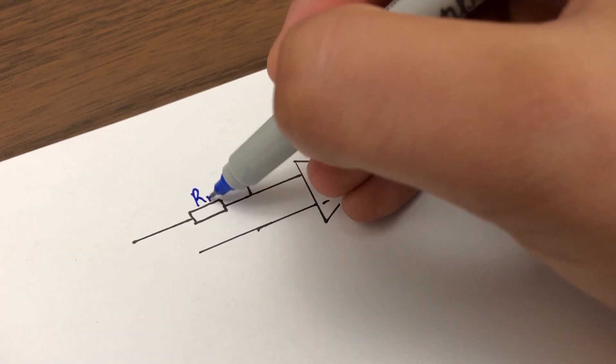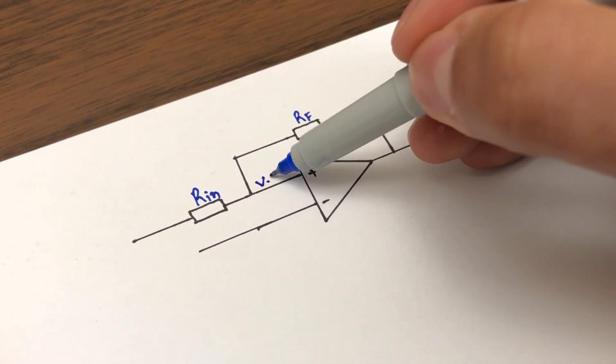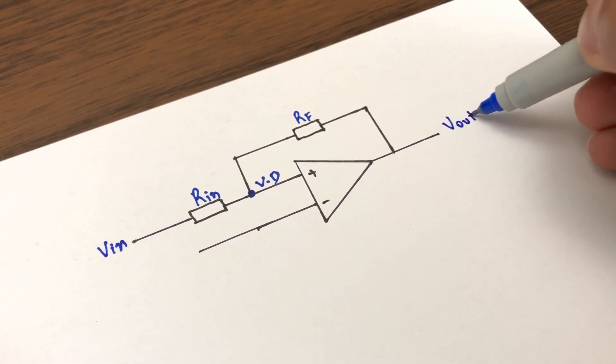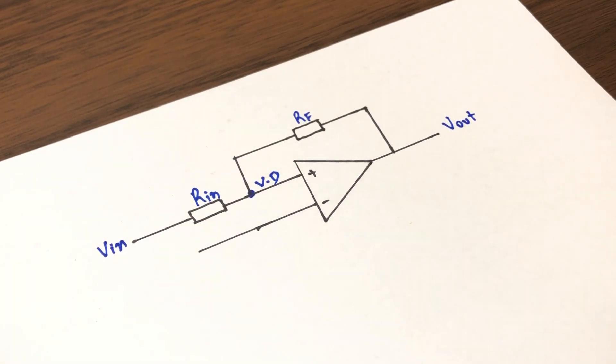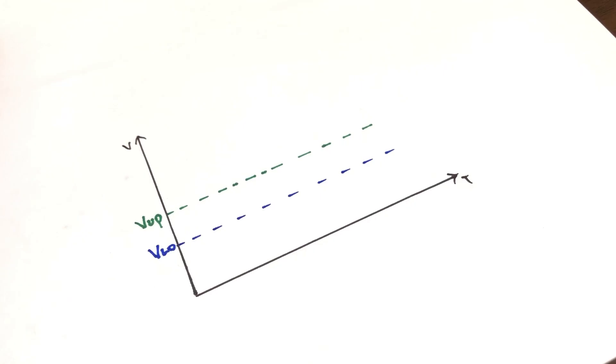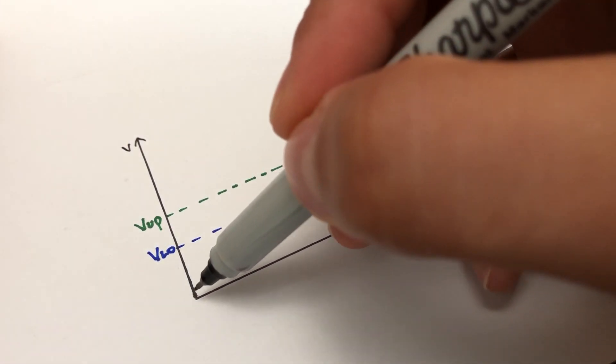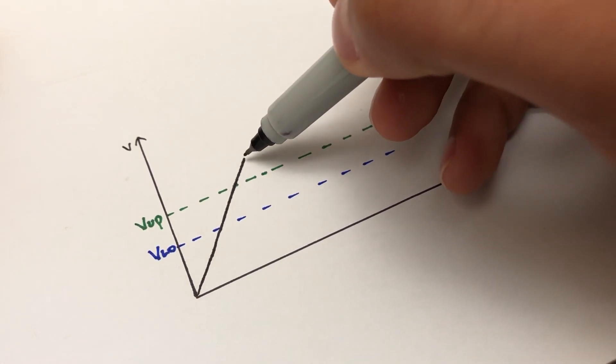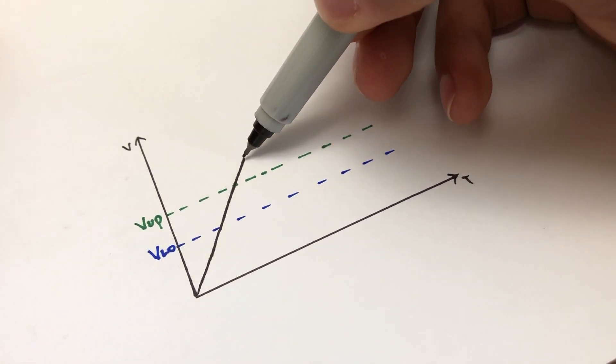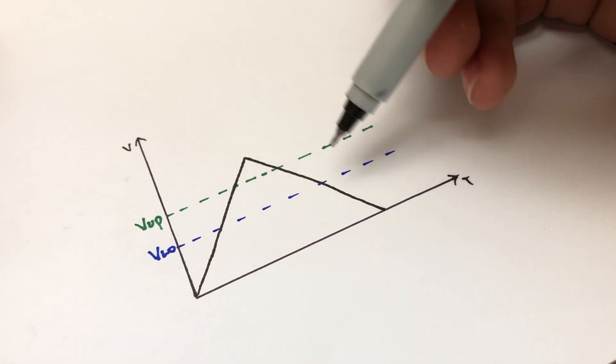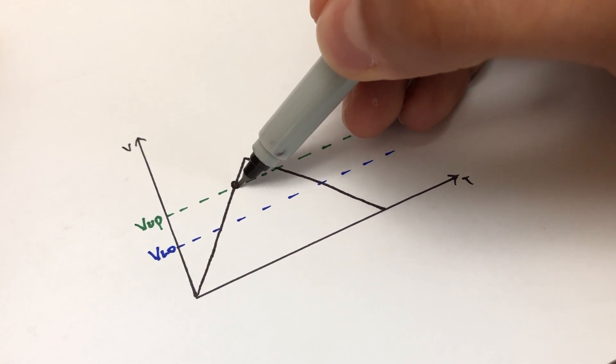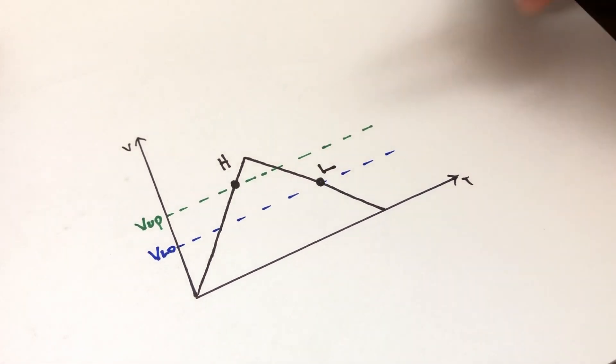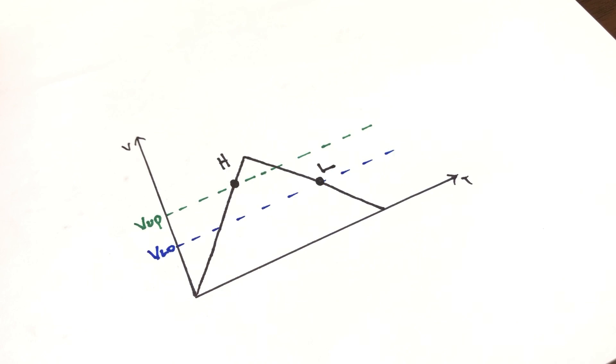This happens because the feedback resistor and the input resistor makes a voltage divider, which influences the non-inverting input voltage based on the output of the op-amp. Thus creating an upper and a lower threshold. So when the input voltage is higher than the upper threshold voltage, the output of the op-amp saturates to a high voltage level. The high voltage level is maintained until the input voltage drops below the lower threshold voltage. At this point, the output of the op-amp switches to a low voltage level, which is maintained until the input voltage rises above the upper threshold voltage.